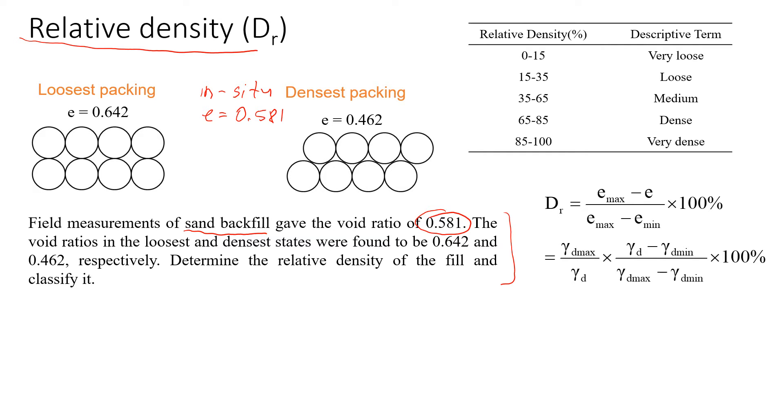The thing is, if we take the soil, this backfill, and test it in the laboratory, and try our best to make the loosest structure of that soil packing, we're going to have a relatively high void ratio for the sand of 0.642. The soil structure will be like this, when we have lots of voids here. That's why we call it the loosest packing.